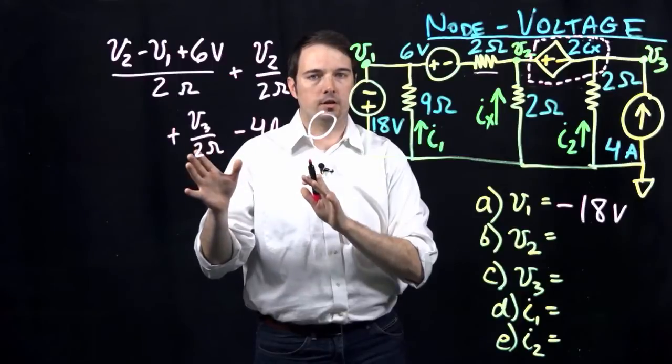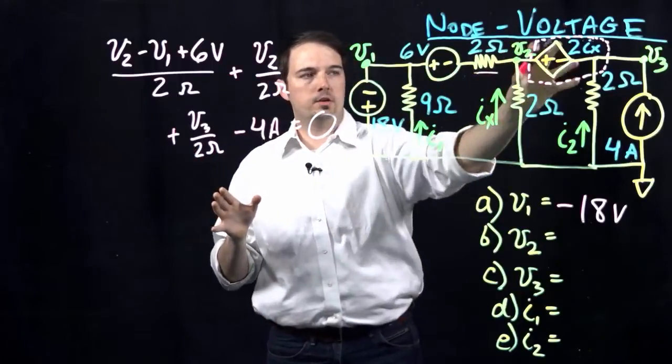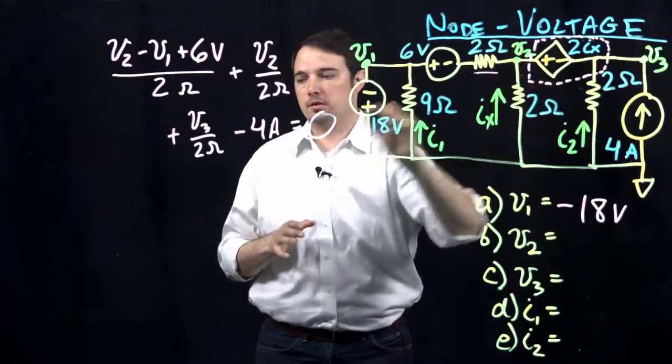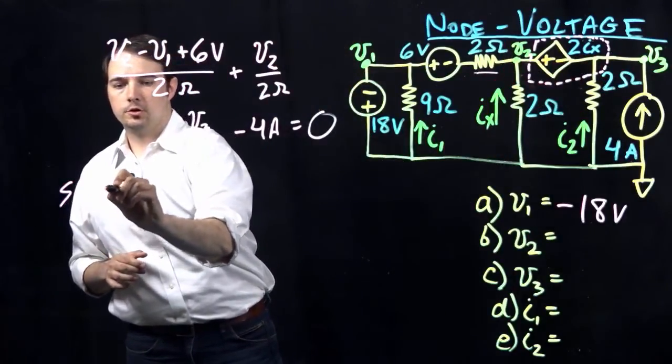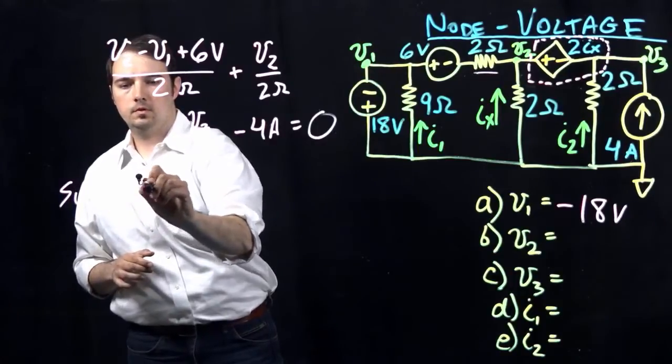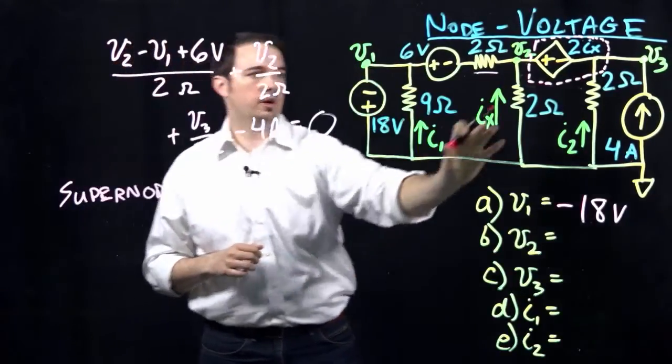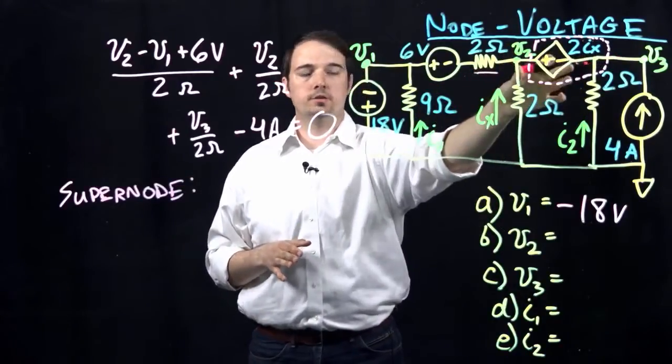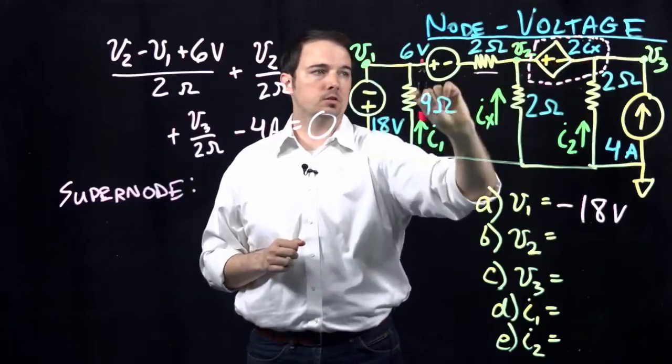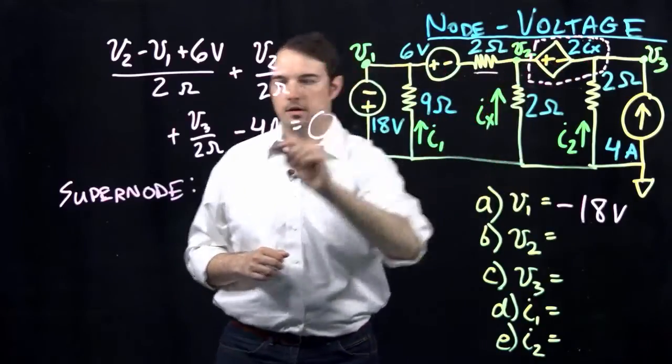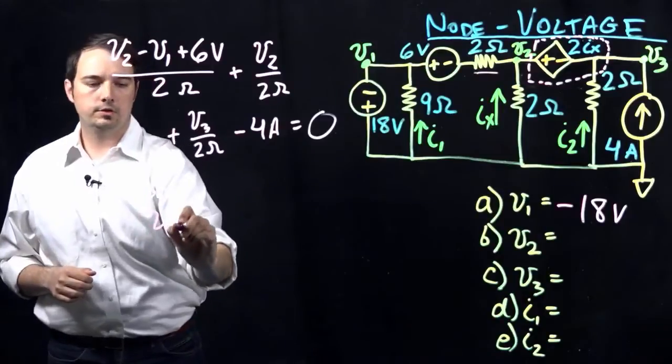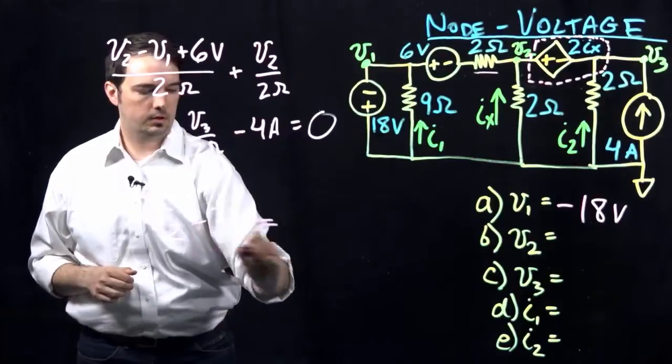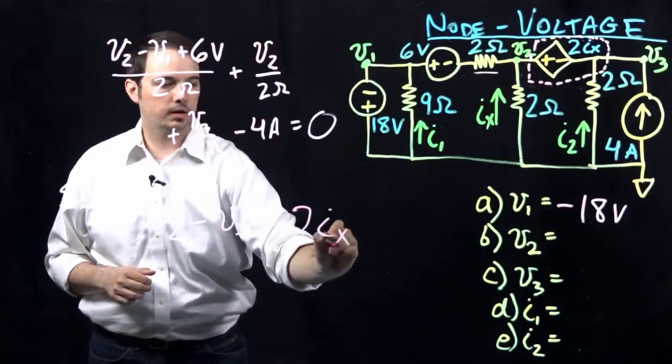Let's see, maybe the second equation we could go ahead and do right now is what would be the equation relating what V2 and V3 are. So, that would be based on what's happening in the supernode. So, if we say we're going to do a supernode equation here. So again, the supernode equation is just basically asking ourselves how are V2 and V3 related through this dependent source. And so, here I could just say that V2 minus V3 would have to be equal to 2IX.